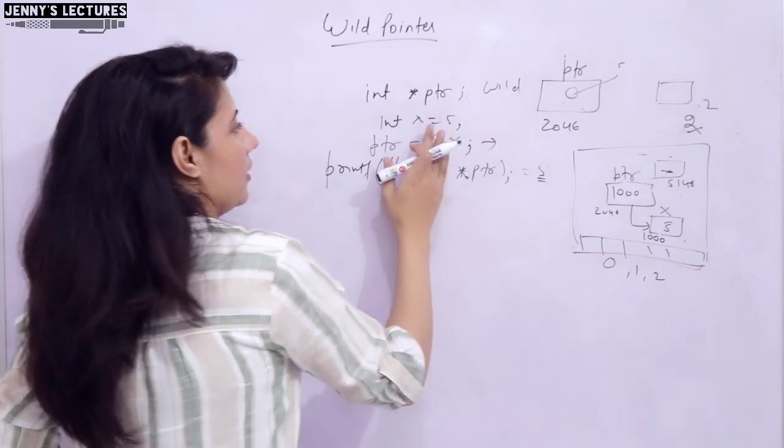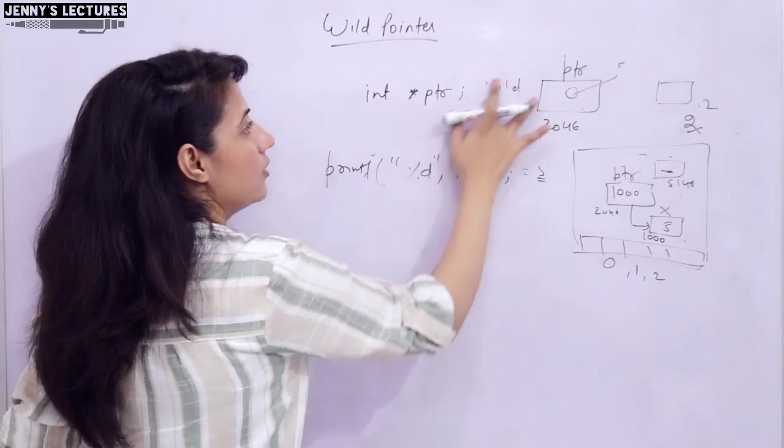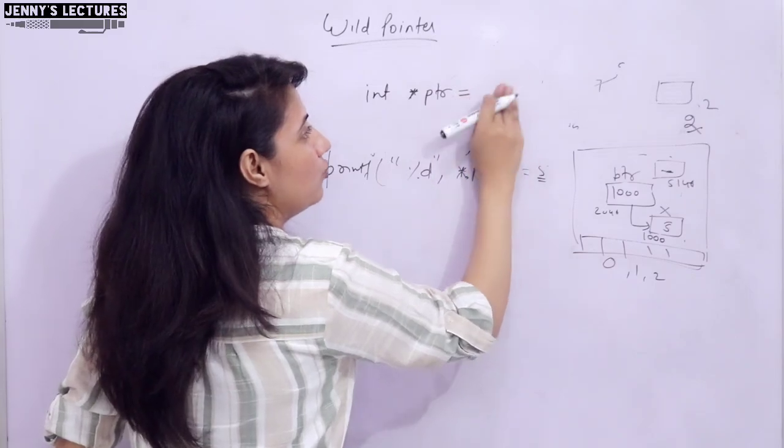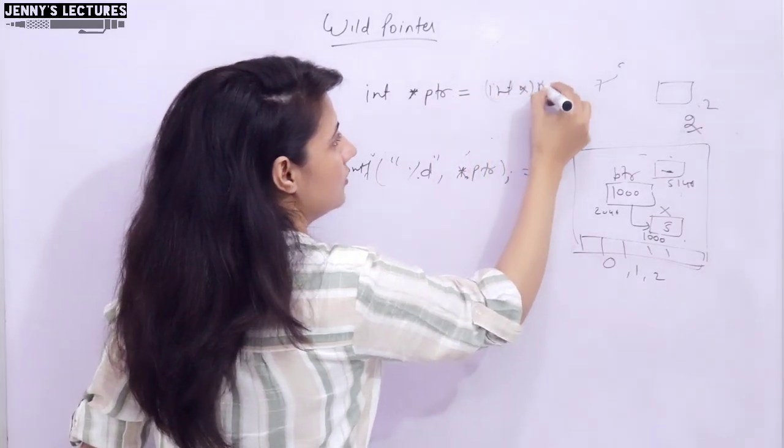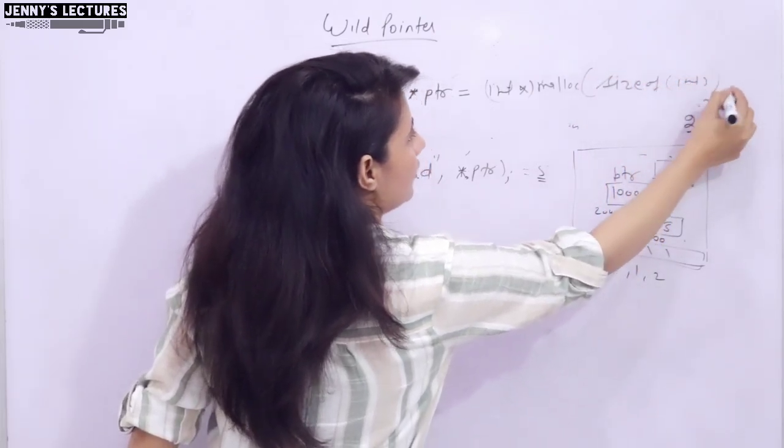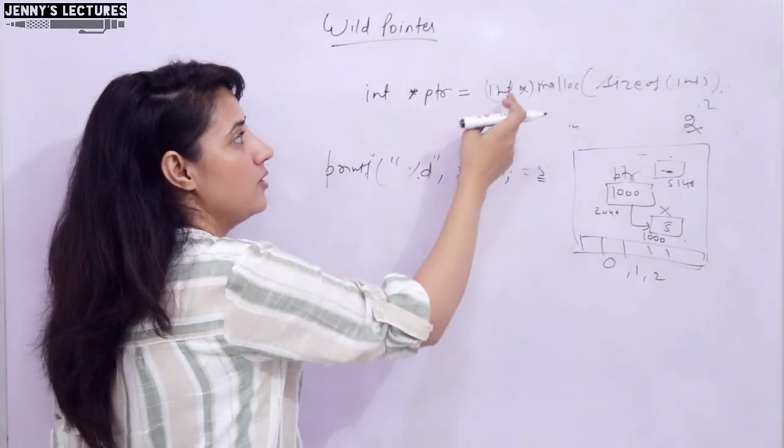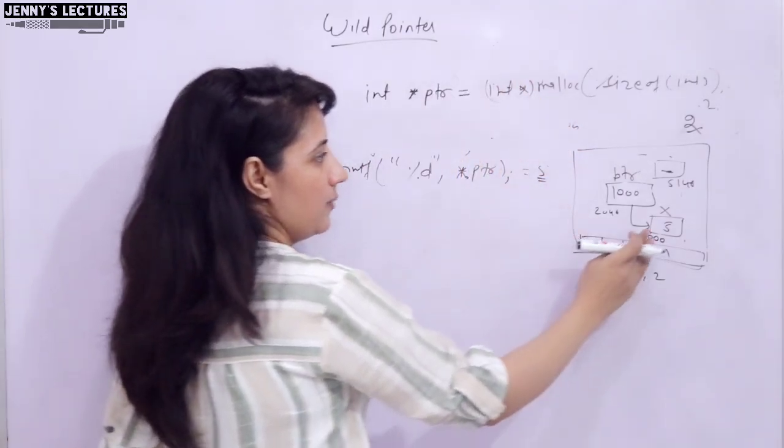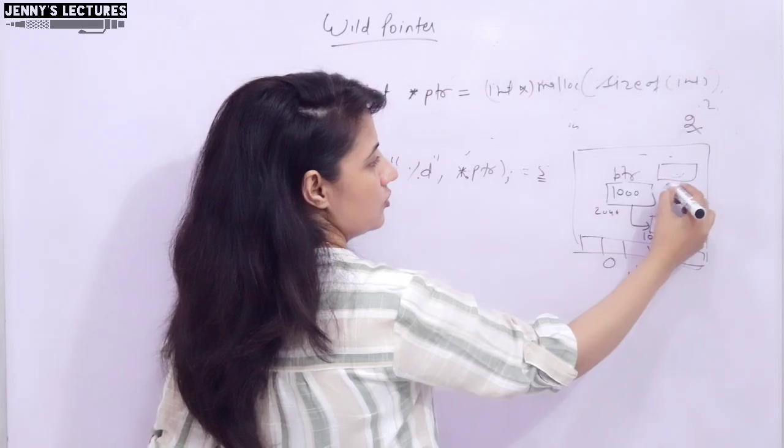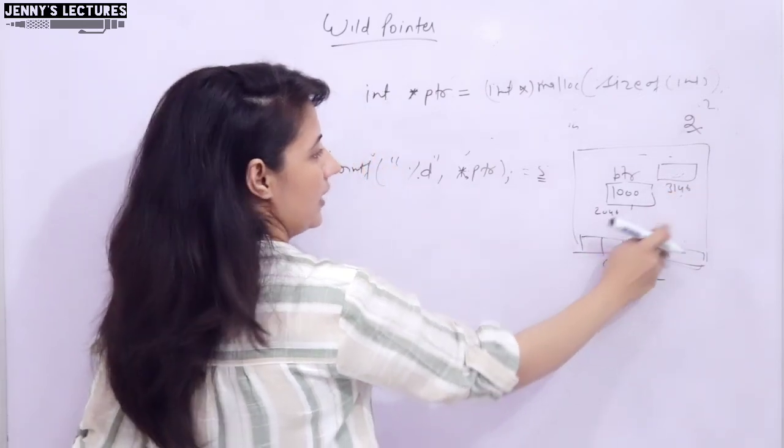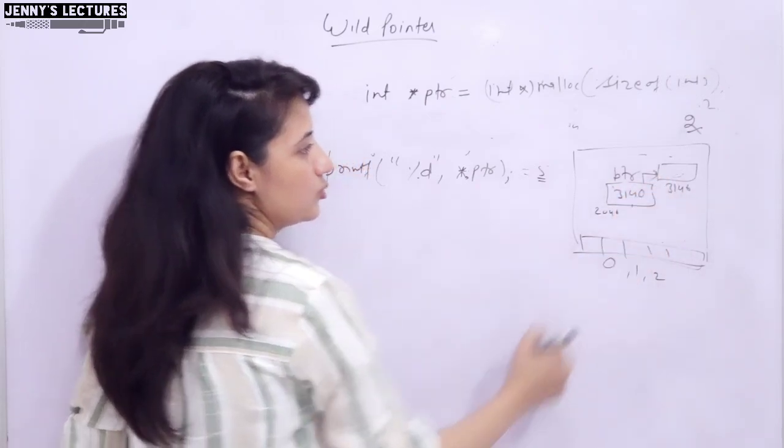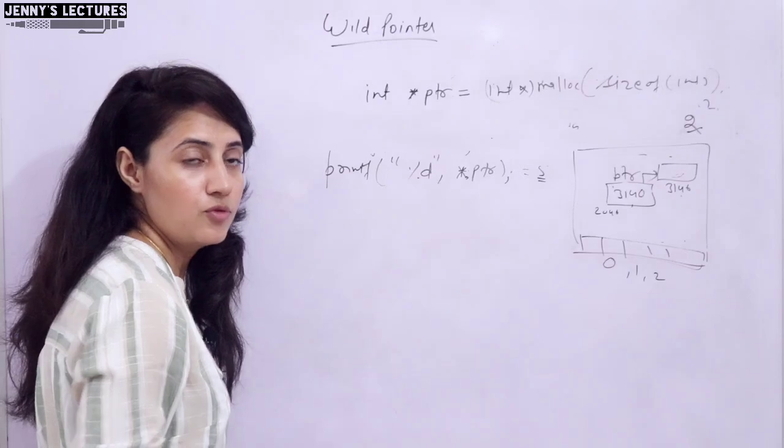So one more thing what you can do? If you do not want to take any variable or these kind of thing, dynamically you can allocate memory. When you declare a pointer, here only dynamically you can use malloc function. Malloc, and here you can simply write like size of int. So 4 bytes would be allocated and the base address of that memory would be given to this pointer. So suppose dynamically this memory has been allocated, this memory, 4 bytes. Suppose address is 3146. So right now we do not have any x here, and now it is containing 3146. So now this pointer is pointing to this memory.